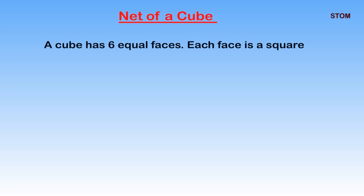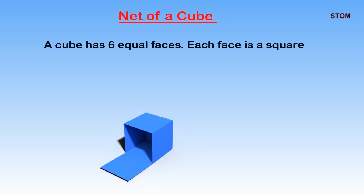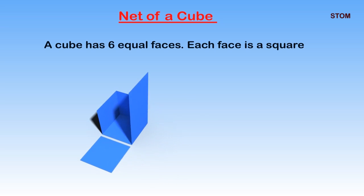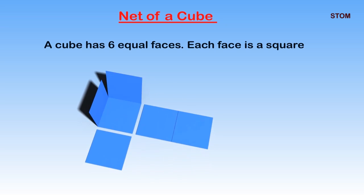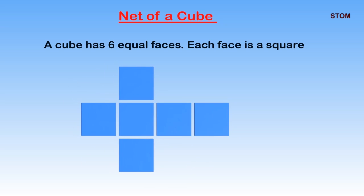Net of a Cube. Moving on in this section, we shall be calculating the net of a cube. We recall that a cube has six equal faces and each face is a square. When it has been flattened out, as you can see, we have six squares to form a cube.